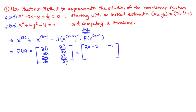Moving to the second function f₂, differentiating with respect to x gives 2x (the other terms are constants and go to zero). For the partial derivative of f₂ with respect to y: x² goes away, we differentiate 4y² with respect to y to get 8y, and −4 is a constant so it also goes away. So the Jacobian is the 2×2 matrix with elements [2x−2, −1; 2x, 8y].